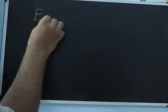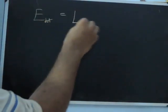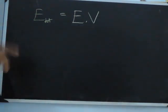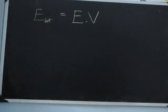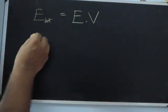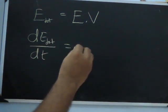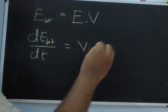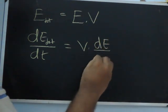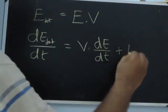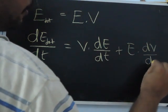We already talked about the growth and decay of sound energy in the room. So let's start with the total energy E_total, which is nothing but the energy density into the volume of the room — using capital V for volume. So the change in this energy with respect to time, DE_total divided by DT, will be V into DE by DT plus E DV by DT.